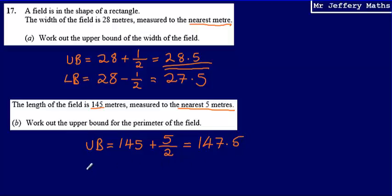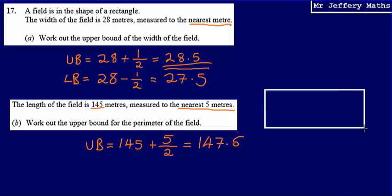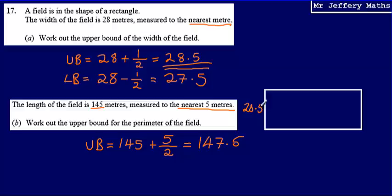Again, I don't need to work out the lower bound here, but if I were trying to work out the lower bound, I would just take 145 and subtract 5 divided by 2. OK, so it's asked me to work out the perimeter. So what I'm talking about here is a field where I've got a width of 28.5. And it's a rectangular field. So I've got a width of 28.5 and a length of 147.5.